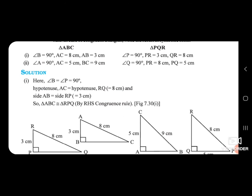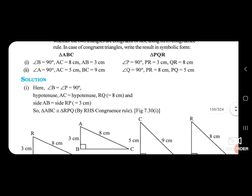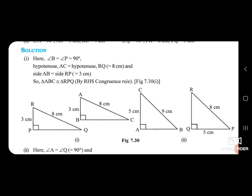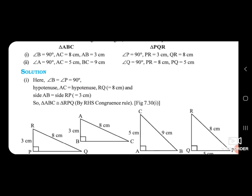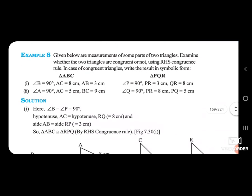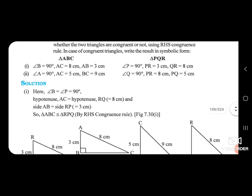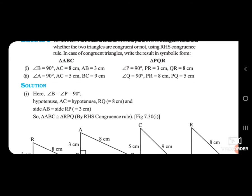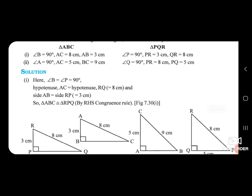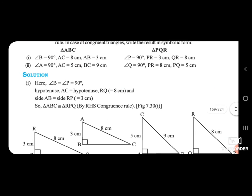So here angle B equals 90 degrees, and the hypotenuse — here we see the hypotenuse, figure 7.30. AC is equal to RQ, so AC is the hypotenuse. RQ equals 8 cm, aur P aur B 90 degree hain, toh PR aur AB 3 cm hain, wo side hai. Toh matlab yahan par kya hua — RHS ka matlab: R aur H ka matlab kya hai, hypotenuse hai, toh R aur H ka matlab kya hota hai, wo aapko dekhna hai. Think karna aur batana ki kya hota hai uska matlab.